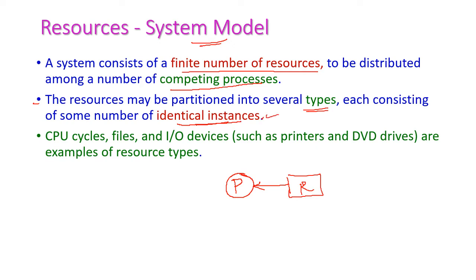For example, a printer resource type may have five printers, and CPU may have two instances. CPU cycles, files, and IO devices are all resource types. IO devices include printers, DVDs, and scanners — these are all examples of resource types.